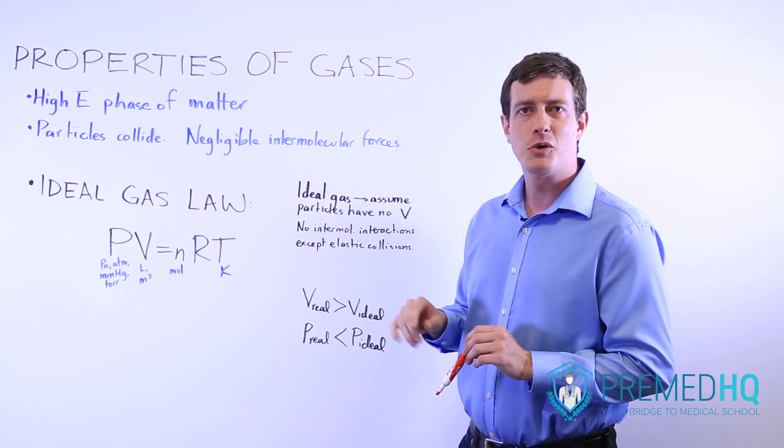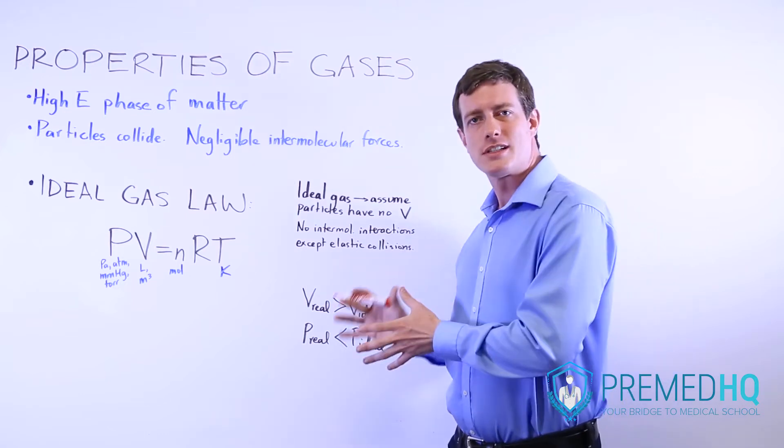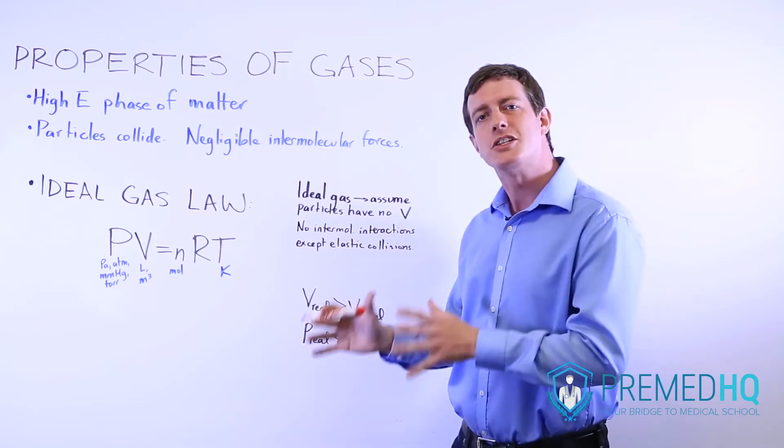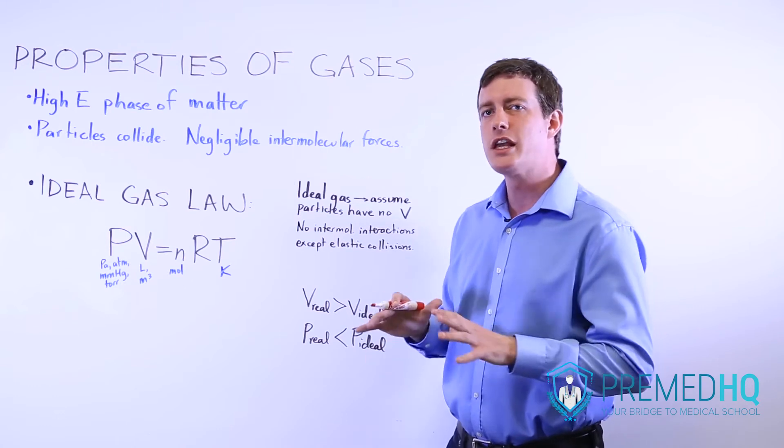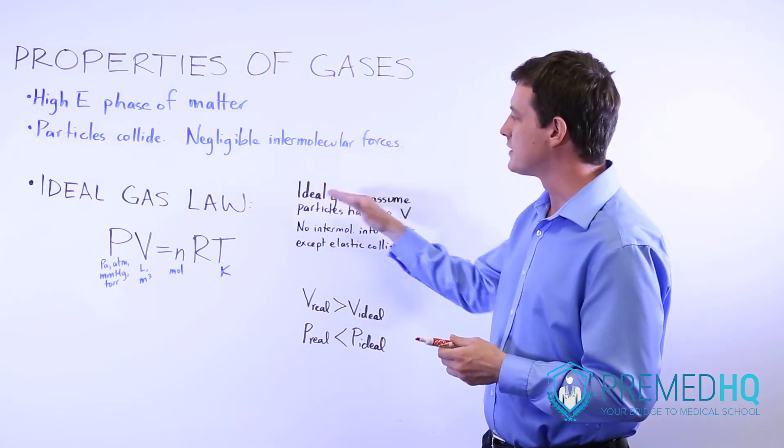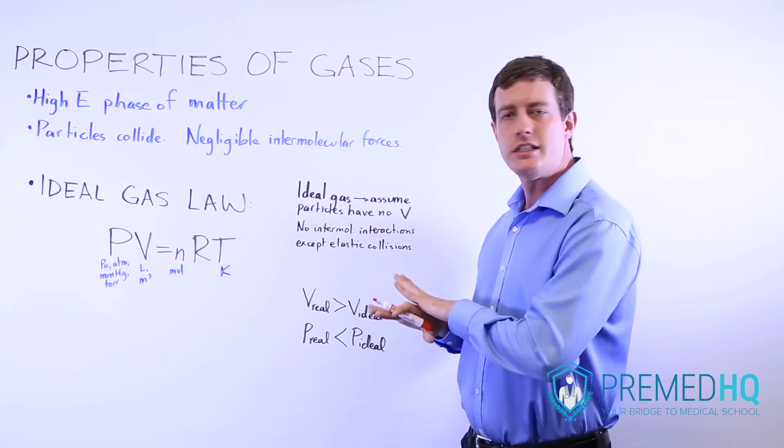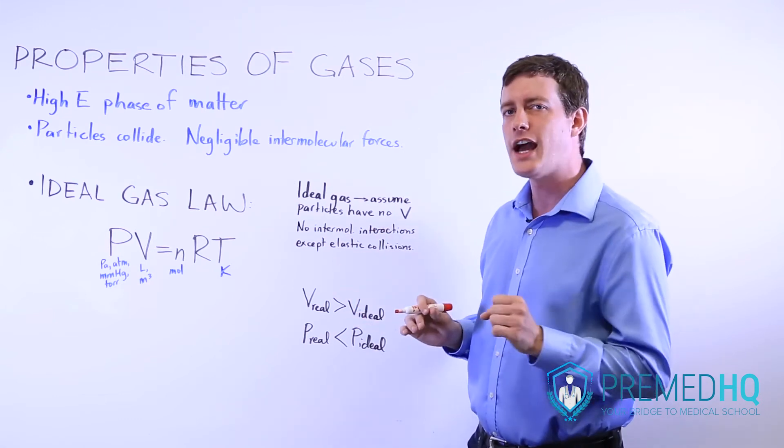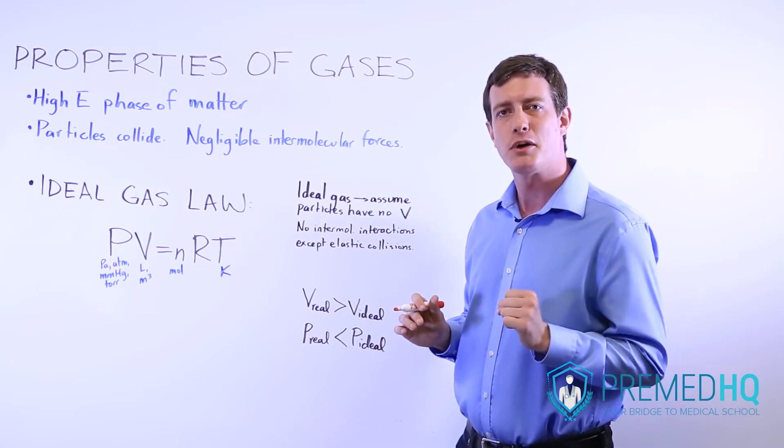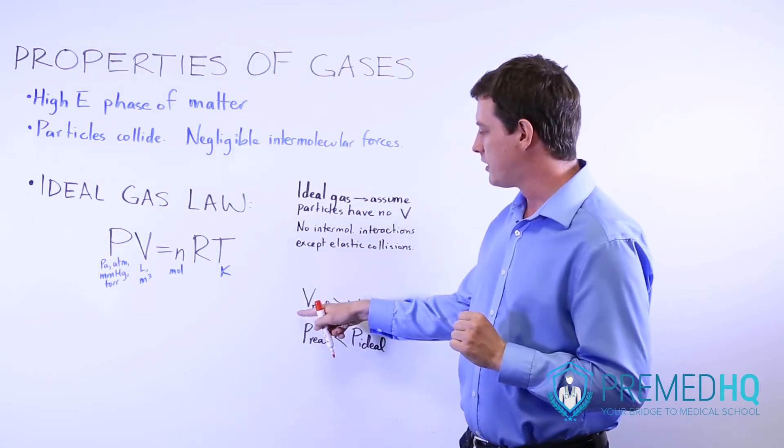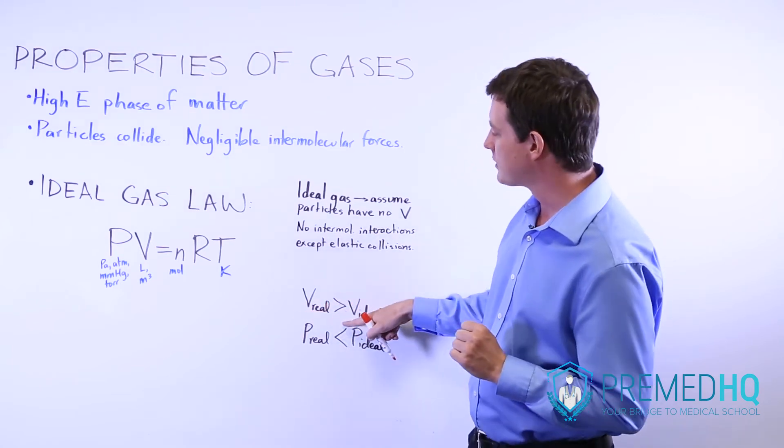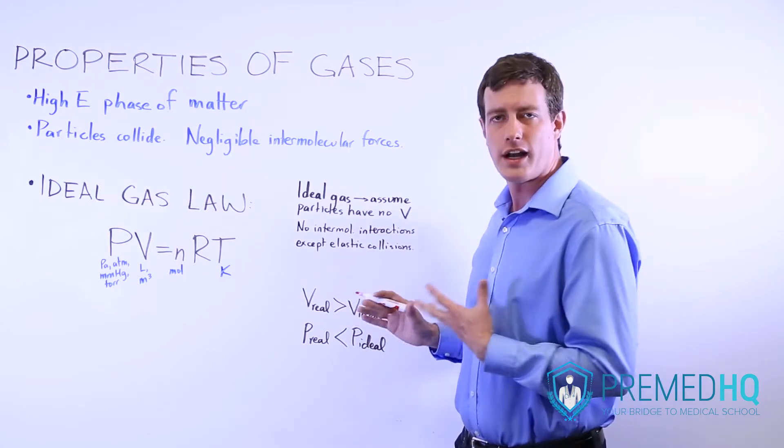Every once in a while you'll be asked a question about a real gas versus an ideal gas. And the big distinction that is being made there is that we can no longer make these assumptions about a gas being completely ideal. Instead of being absolutely devoid of volume, the particles actually do have a small amount of volume.